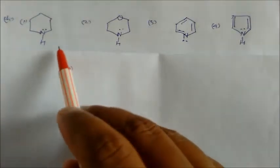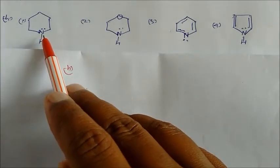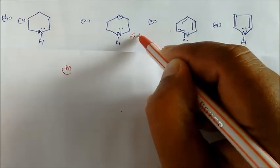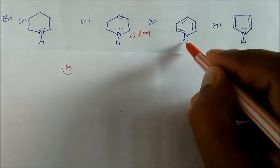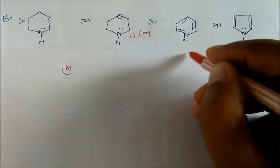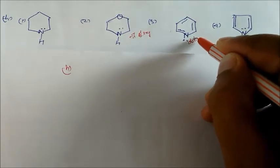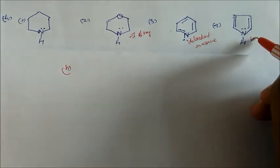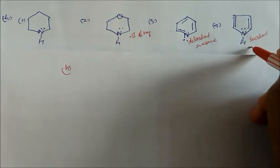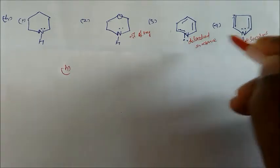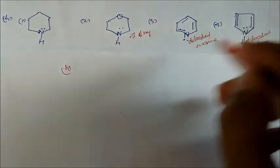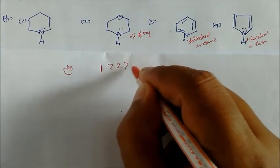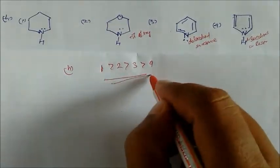In the next set, lone pair is present on nitrogen making it basic, but there is a –I effect from oxygen in one compound. In another, the lone pair is delocalized via resonance, making it less available. One compound has the lone pair completely engaged in resonance, while another is only partially delocalized. The basicity order is: 1 > 2 > 3 > 4.